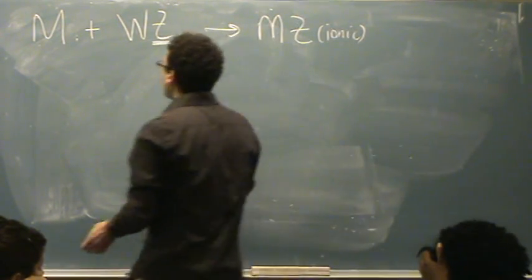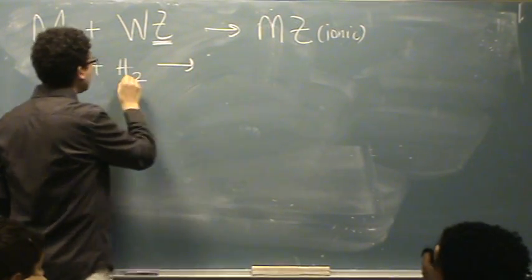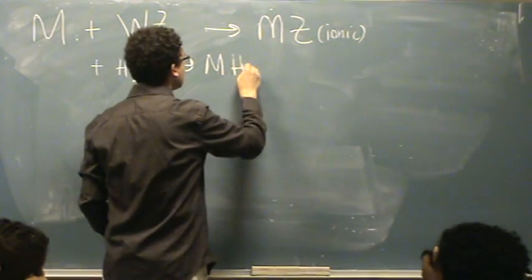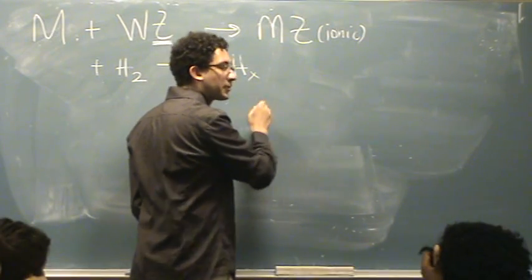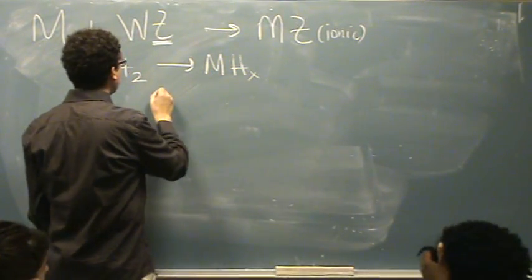The first one is metal plus H2, and you want to think of the H minus as the anion, so it will make MH, and you've got to figure out what the subscripts are, so that depends on the problem and the metal. But this is from H minus.